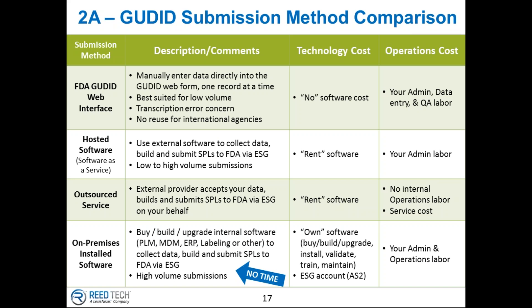We won't go into this chart in detail, but you can go back as homework and look at some of these characteristics for the various solutions. The four rows identify the FDA GoodID web interface, the hosted version, the outsource, and the on-premises. At this point in time, I don't believe on-premises installed software will have time. Some of these hosted software systems are able to be tiered as far as pricing and capability. Some of our clients only have a single record, so it's able to be scaled to small to large volume submissions.